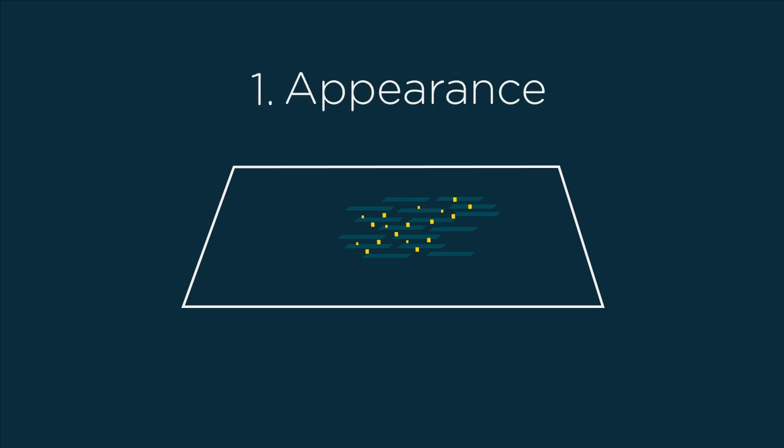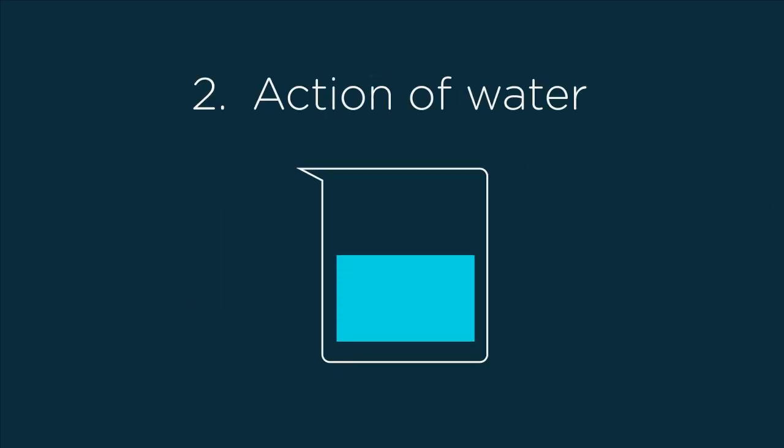Test 1: Appearance. In the mixture, we can clearly see the dark grey crystals of iron and the bright yellow powder of sulfur. Test 2: Action of water. We see that the iron in the mixture sinks and the sulfur floats. The components of the mixture have separated.